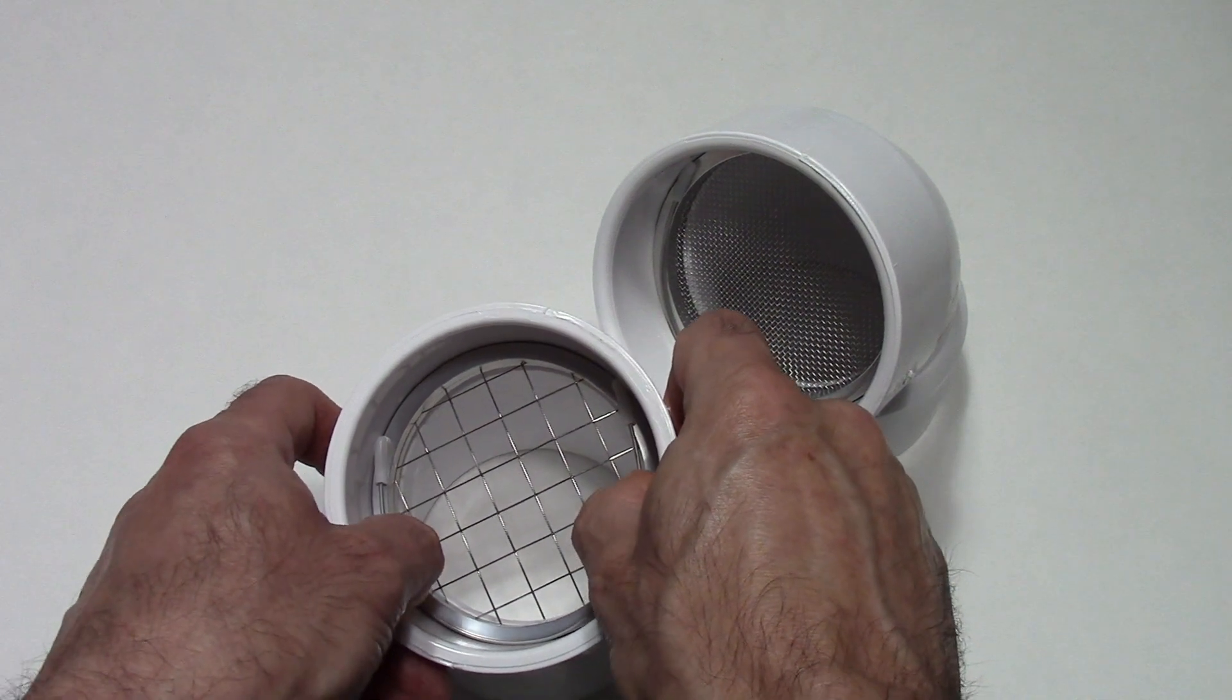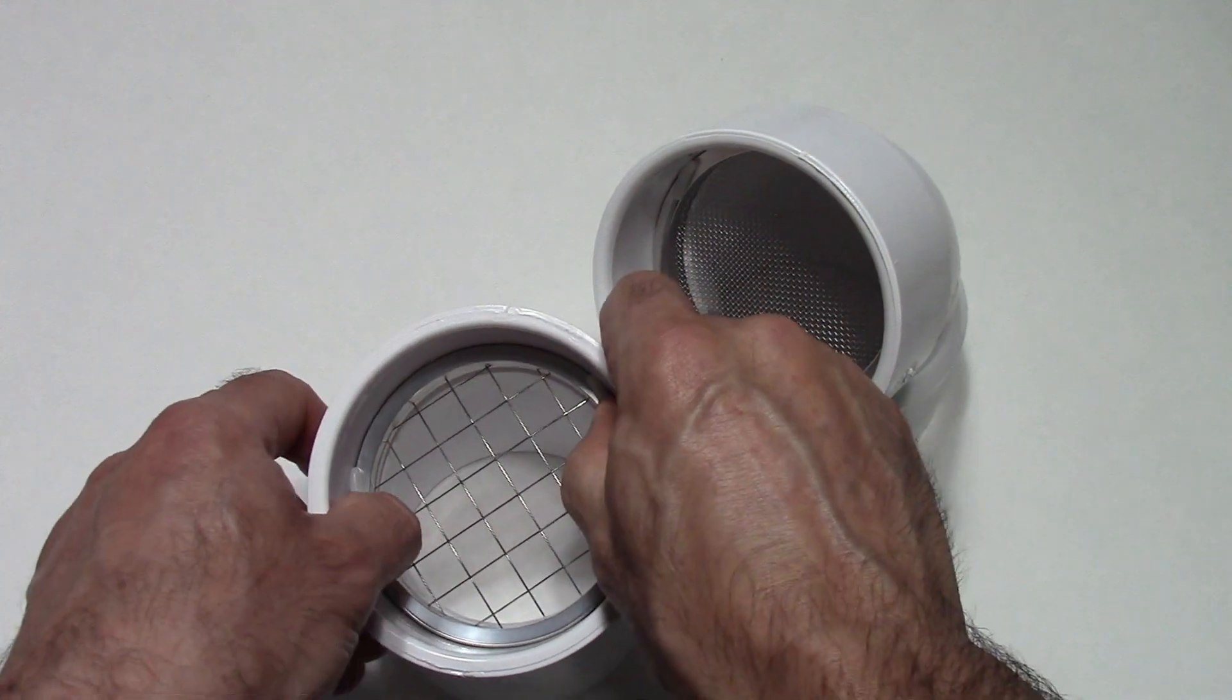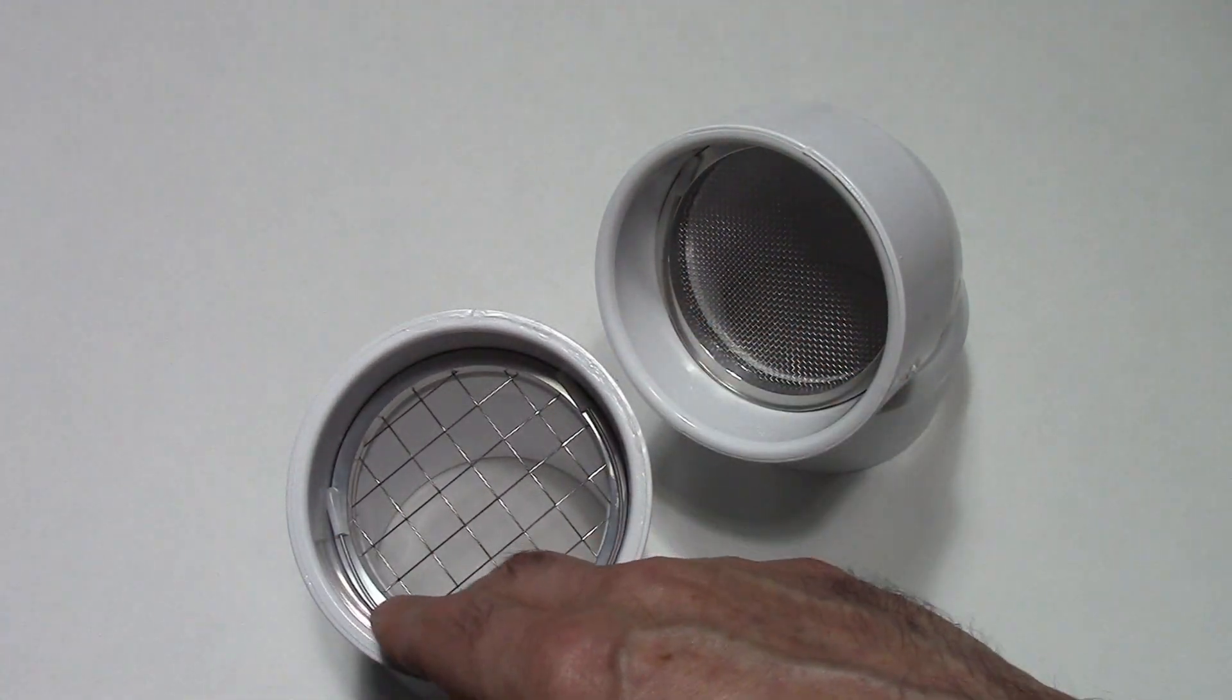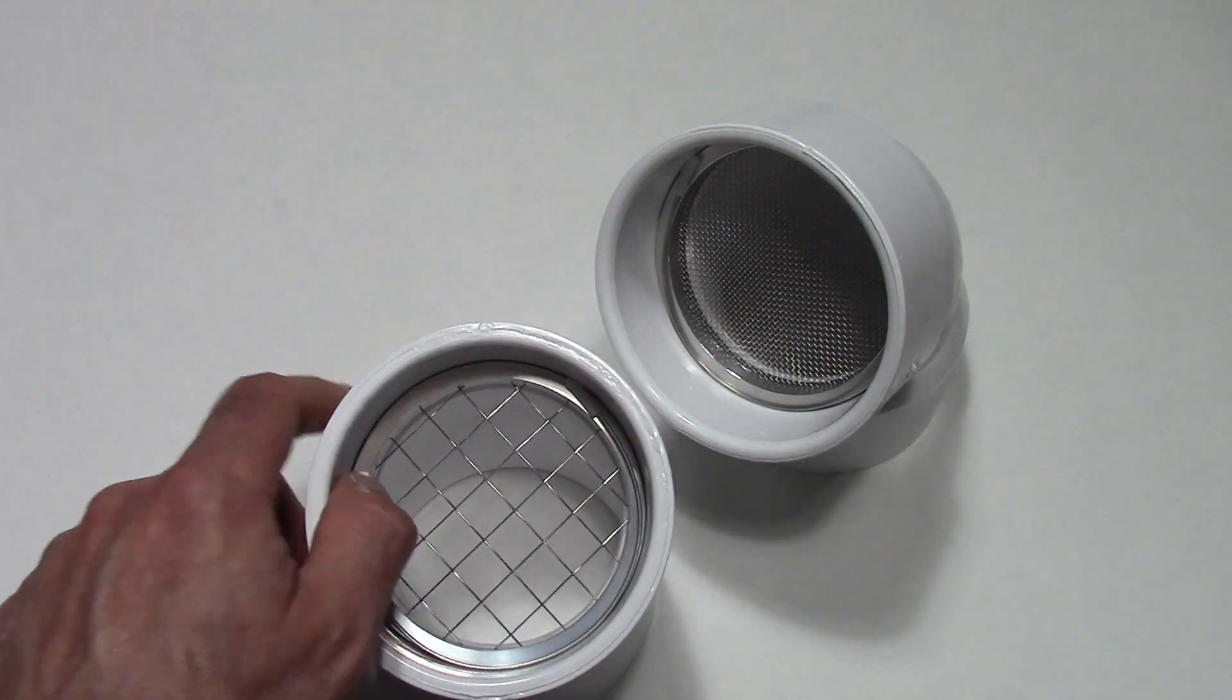Once it's in place you want to push it back and then expand it out. This way it conforms to that vent termination hub housing and it holds it in place.